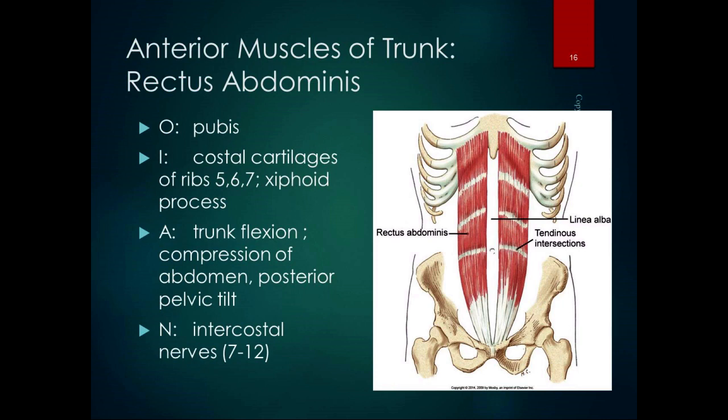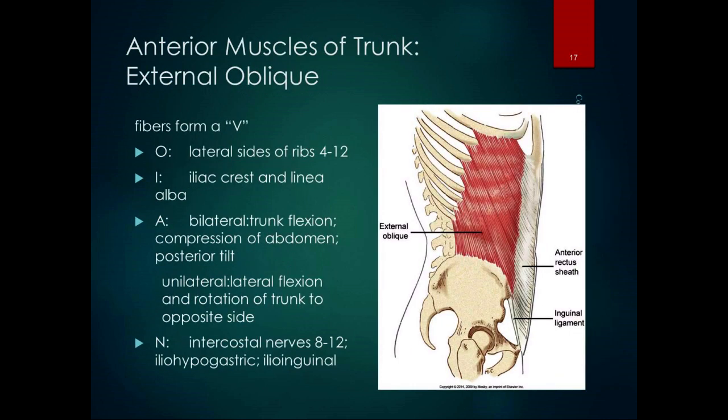The rectus abdominis gets intercostal nerves — nerves in the area. The external oblique is the next deepest layer; the rectus abdominis is the most superficial. The external oblique fibers form a V shape — if you point your fingers down in a V. They originate on the lateral sides of ribs four through twelve, where they interdigitate with the attachments of the serratus anterior, creating that zigzag line visible in lean individuals. They insert on the iliac crest and the linea alba.